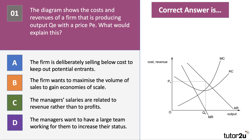Here's the first question. The diagram shows the costs and revenues of a firm that is producing output QE with a price PE. Which of the following four options would explain why the firm has settled on an output of QE selling at a price PE? Press the pause button.